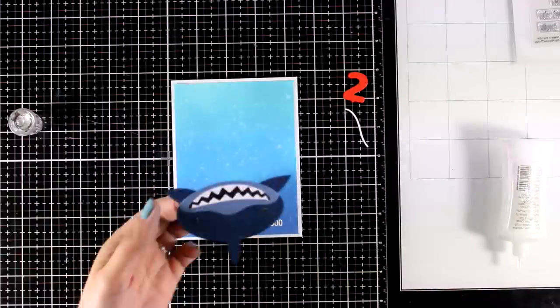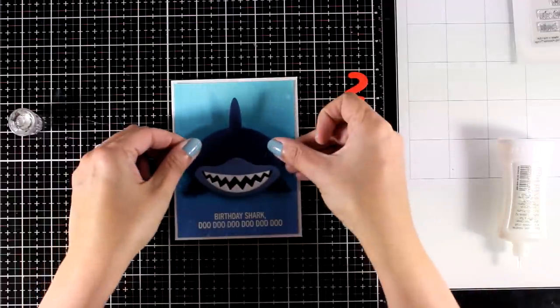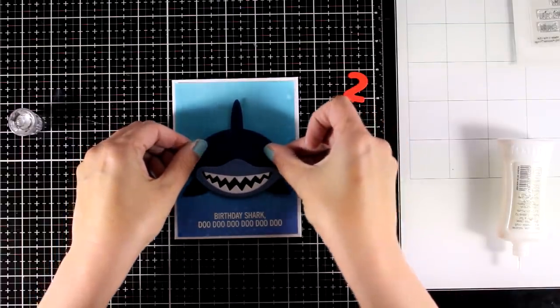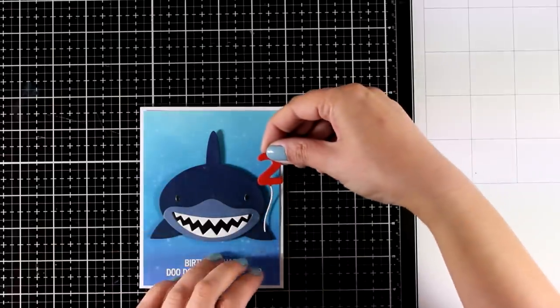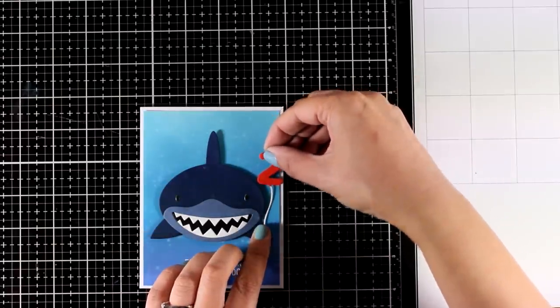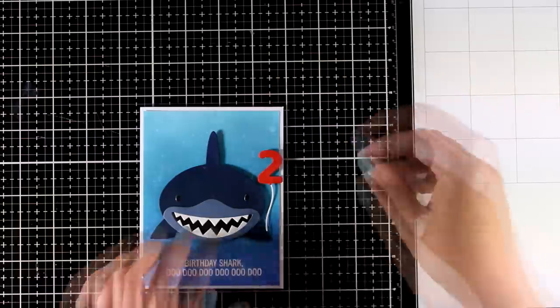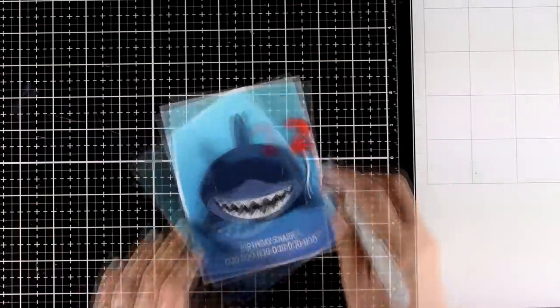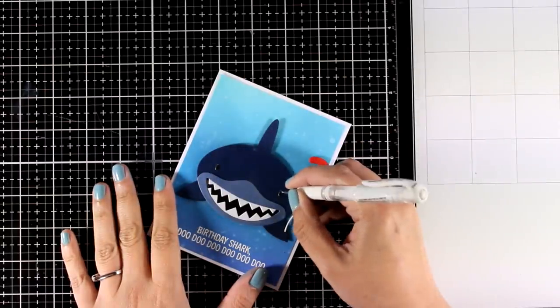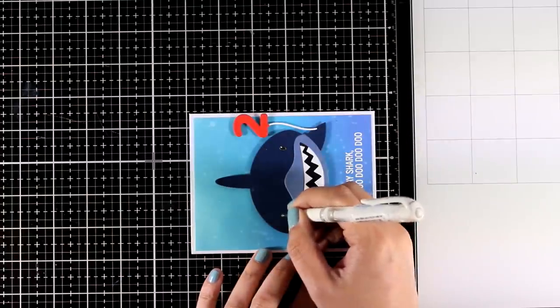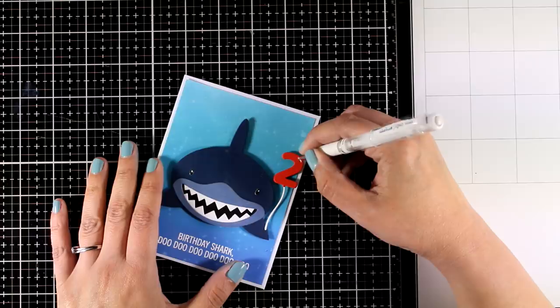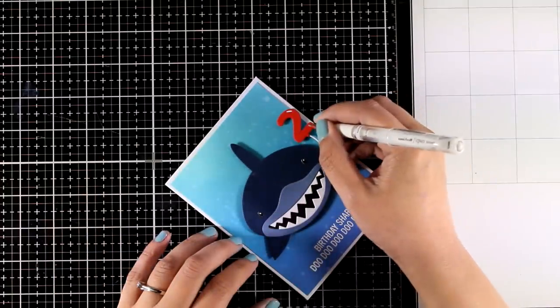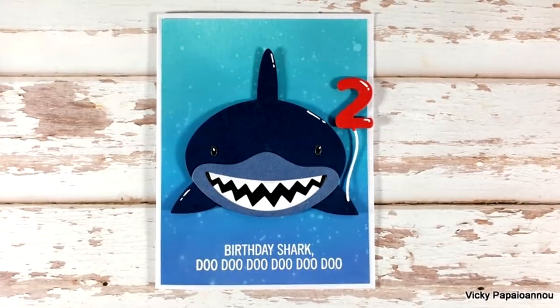And you know I love dimension on my card so I can't help it, I have to add foam squares at the back of my shark to pop him on the card. And I will do the exact same thing for the number two. I am going to bring in my white gel pen and just add some finishing touches like highlights on his eyes as well as highlights on the balloon and on areas of the shark. And here are some close-up photos on the last card for today.